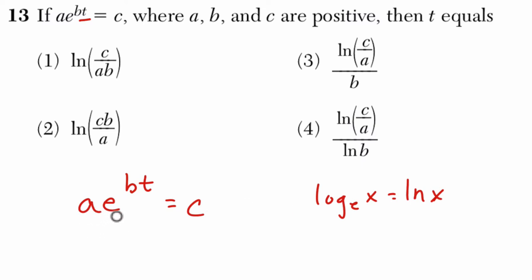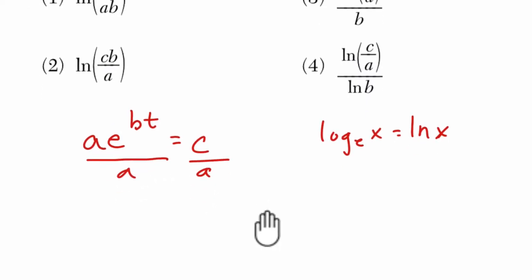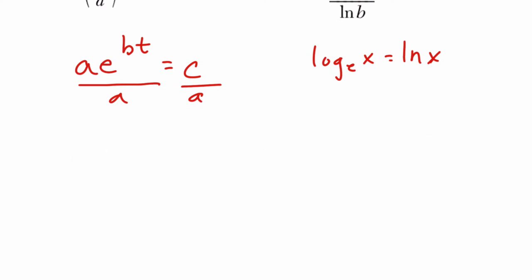Why is that useful here? Well, let's isolate e to the bt first, get a by itself, it's going to help us. And then once we do that, we just have, let's cross these things out here. Boom. And what we have left is e to the bt equals c over a,